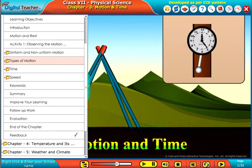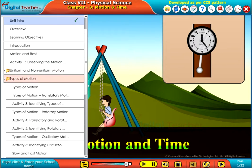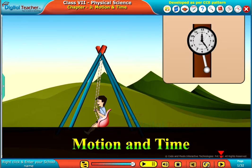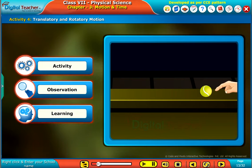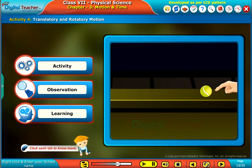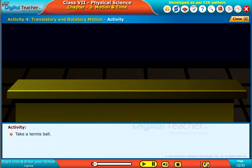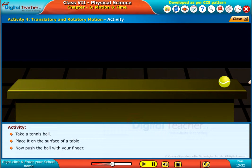Welcome to the chapter motion and time. Let us perform an activity to observe both translatory and rotatory motion. Take a tennis ball, place it on the surface of a table, now push the ball with your finger and observe the motion of the ball.